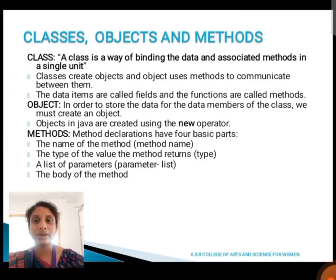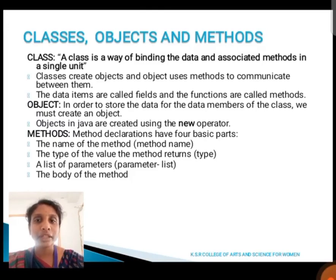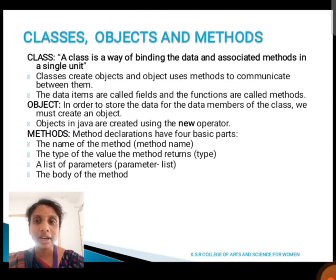Next, we are going to see about classes, objects, and methods. A class is a way of binding the data and associated methods in a single unit. A class creates objects, and the objects use methods to communicate between them. The data items are called fields and the functions are called methods. In order to store data for the data members of the class, we must create an object. Objects in Java are created using the new operator. A method declaration has four basic parts: the name of the method, the return type of the method, the list of parameters, and the body of the method.